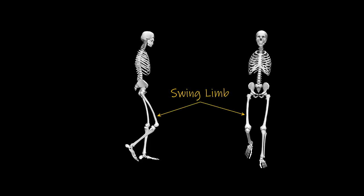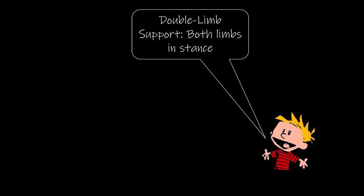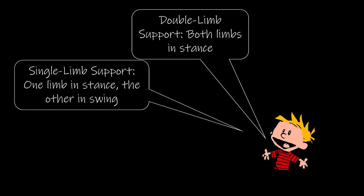In the figure here, the swing limb is the right leg, while the leg that is in contact with the ground is the stance limb. In this particular case, the left leg ends up being the stance limb. So with double limb support, both limbs are in a stance phase, while in single limb support, one limb is in a stance phase while the other limb is in a swing phase.